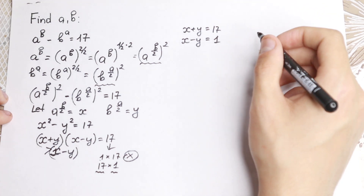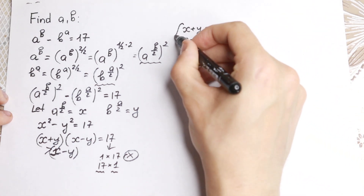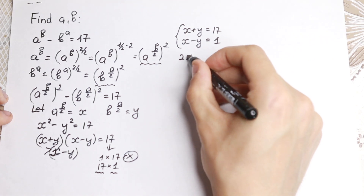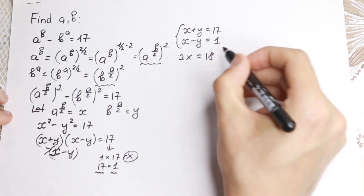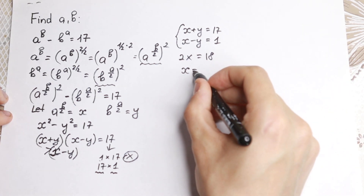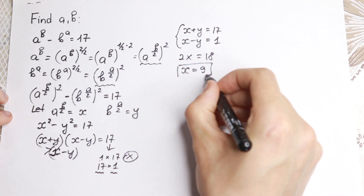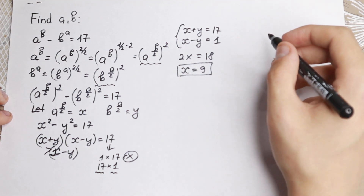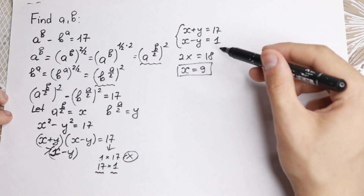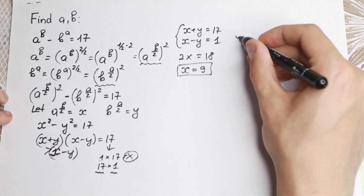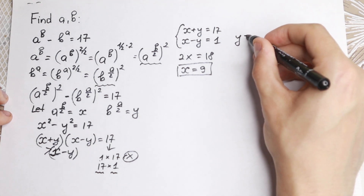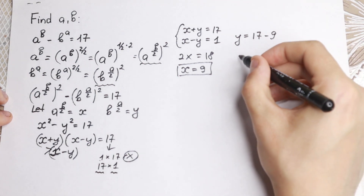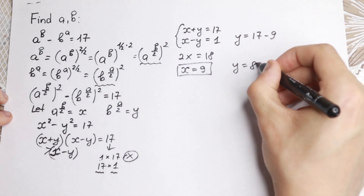So we have the system: x plus y equals 17, and x minus y equals 1. Adding the two equations gives 2x equals 18, so x equals 9. Plugging back in: y equals 17 minus 9, so y equals 8.